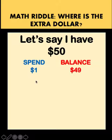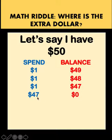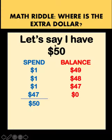From this 49, let's say I spent again another $1, so my balance would be 48. And I spent again another $1 and my balance would be 47. And finally, let's say I spent that remaining amount of $47 and so my balance would be 0. If we add the spend column, we get $50, which is consistent with the amount I started with.